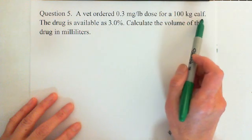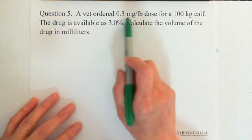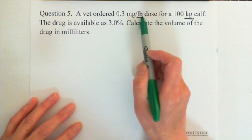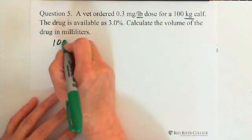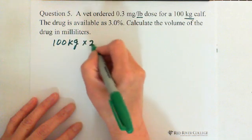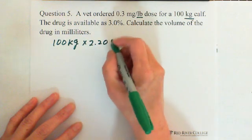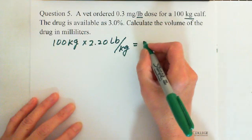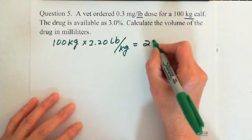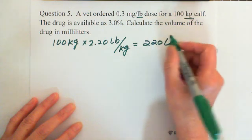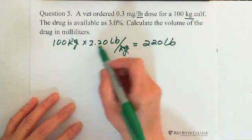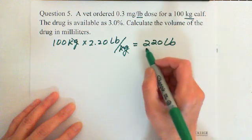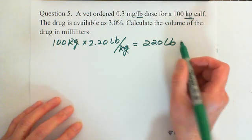This question is related to body weight. The calf is 100 kilograms, but the dose is given per pound — so the concentration unit is in pounds. We need to convert 100 kilograms by multiplying by 2.20 pounds per kilogram. Kilograms cancel out, and 2.20 times 100 gives 220 pounds. So the 100-kilogram calf actually has a body weight of 220 pounds.